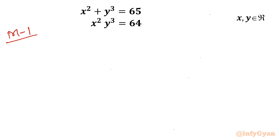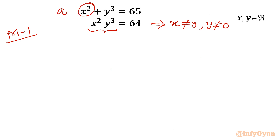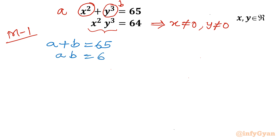From the second equation, one important point: x can't be 0 and y can't be 0 as they are in a product. Now I will use substitution. I will consider x squared equal to a and y cubed equal to b. Let us reframe our equations: a plus b equal to 65, and a times b equal to 64.